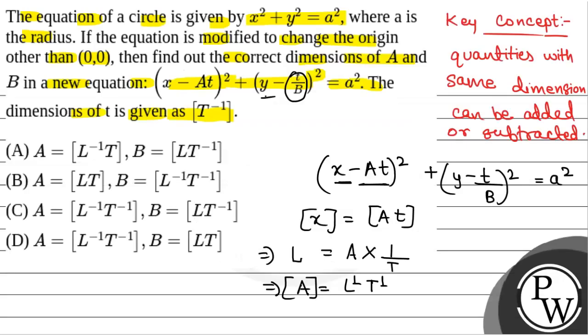So the correct option is: dimension of A equals LT⁻¹ and dimension of B equals L⁻¹T⁻¹, which is option B. Hope you all understood, best of luck.